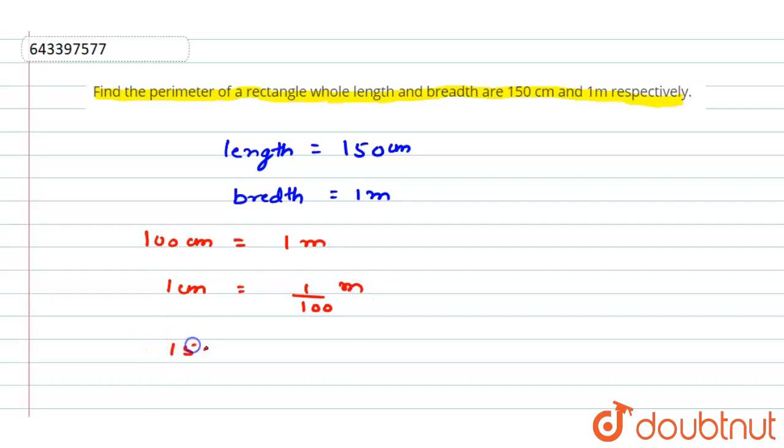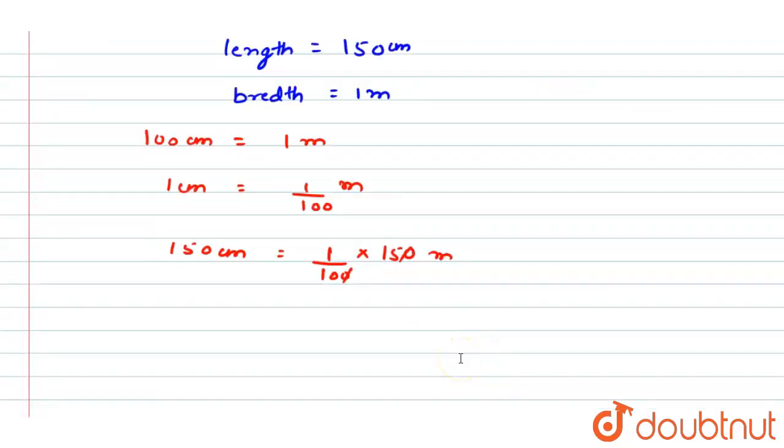Now 150 centimeter is equal to 1 by 100 into 150 meter, so from here 15 by 10 meter. And 15 by 10 is also written as 1.5 meter, so now we got the length.